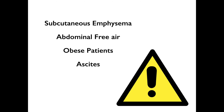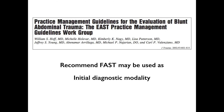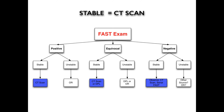Things to watch out for: subcutaneous emphysema — air in tissue may block your images. Abdominal free air may impair visualization when ruling out hemoperitoneum. Obese patients can be difficult, and patients with ascites already have free fluid. Practice guidelines recommend FAST as an initial diagnostic modality, but in stable patients a CT scan is indicated and should never be delayed for a FAST scan. However, in unstable patients a positive FAST really dictates management and can locate the site of bleeding.